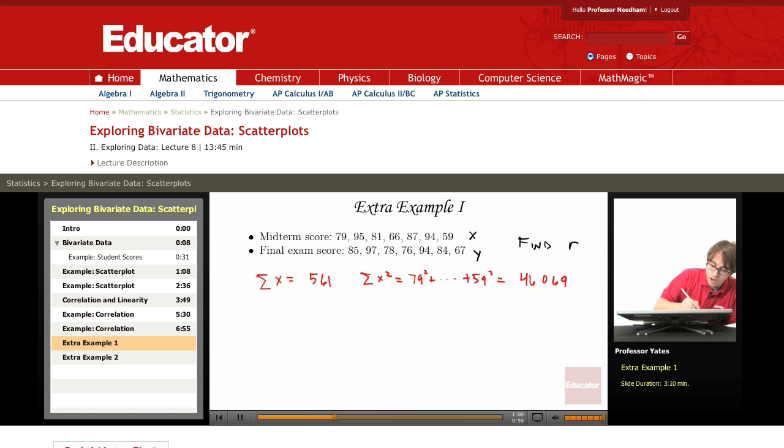We're going to do the same thing for the y's. So if I add up all those values of the y's, I should get 581. If I square each one of those values, so I'm taking 85 squared plus 67 squared, that should give me 48,875.